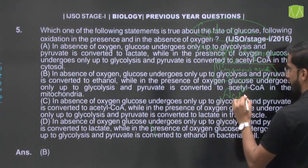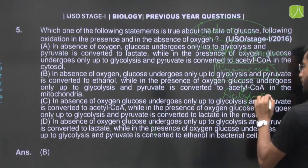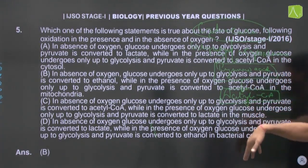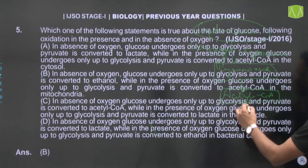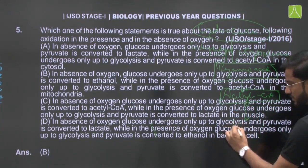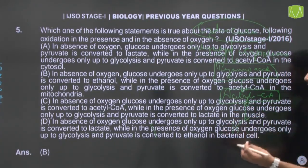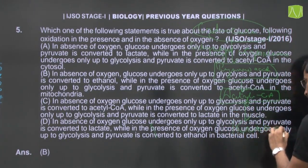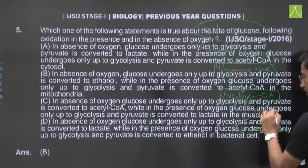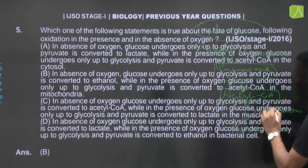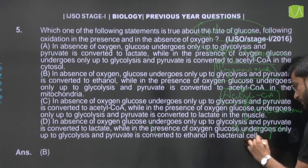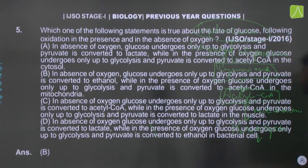Acetyl coenzyme A — this link reaction occurs in the mitochondria, between the pyruvic acid and finally the Krebs cycle. In the Krebs cycle, which also happens in the mitochondria, final oxidation occurs. The end products CO2 and water are formed, and 38 ATP molecules are released as energy.